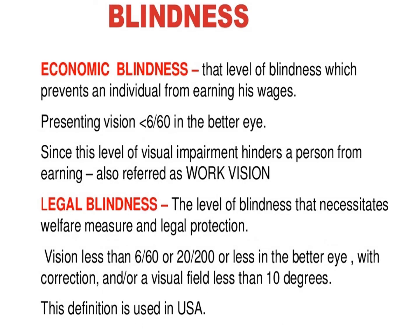What is Blindness? Economic Blindness: that level of blindness which prevents an individual from earning his wages. Presenting vision is less than 6/60 in the better eye. Since this level of visual impairment hinders a person from earning, it is also referred to as work vision.